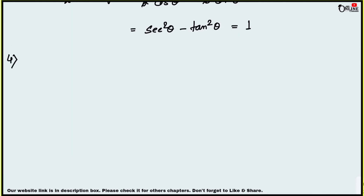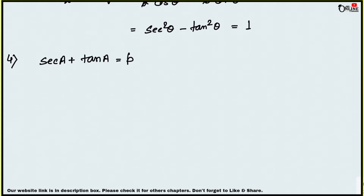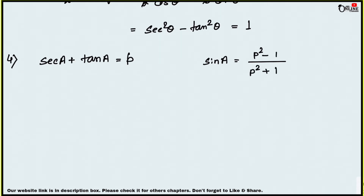Sum number 4: if sec a + tan a = p, then show that sin a = (p² - 1)/(p² + 1). You have to prove this. I'm going to start from the right-hand side.